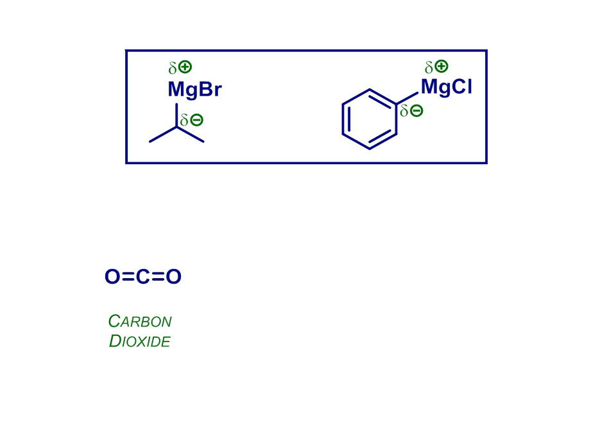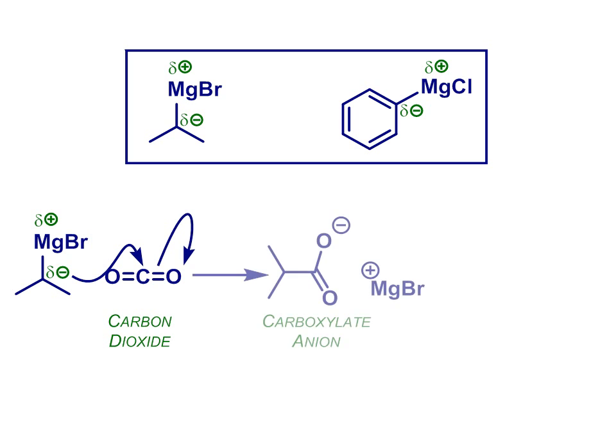Grignard reagents will also react with carbon dioxide in a similar fashion. Nucleophilic attack of the carbon-centered nucleophile at the carbonyl carbon. Only this time, the end product is a carboxylic acid, by virtue of the extra oxygen that's present in the carbonyl starting material.